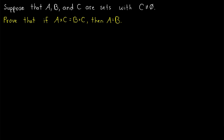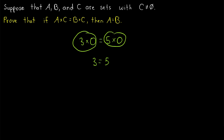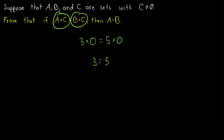Take a moment to think about why we need C to be non-empty. It's a lot like multiplying by zero. For example, 3 times 0 is equal to 5 times 0, but we can't cancel the zeros and conclude that 3 is equal to 5. The problem is that any number times 0 is 0, so that's why we can't do that cancellation. Similarly with the empty set, any set crossed with the empty set is the empty set.